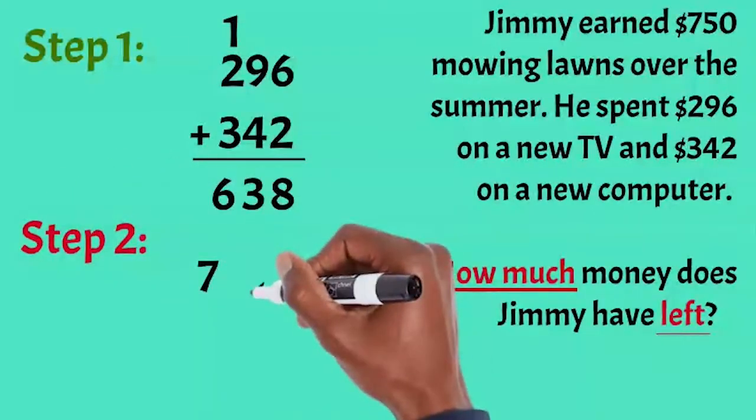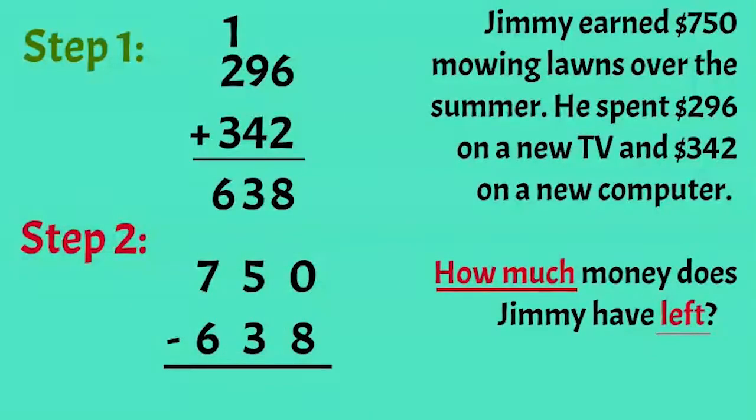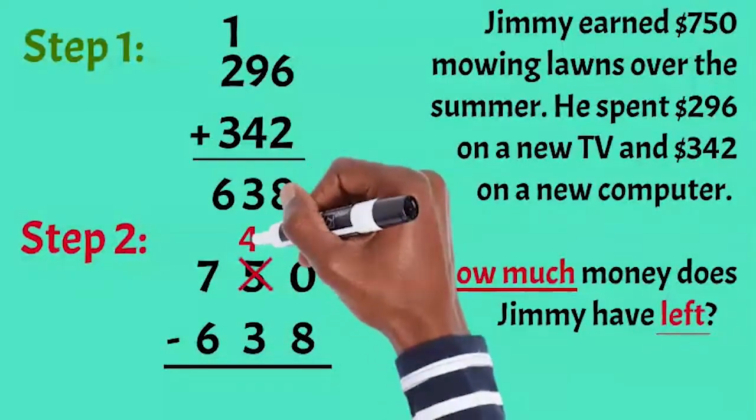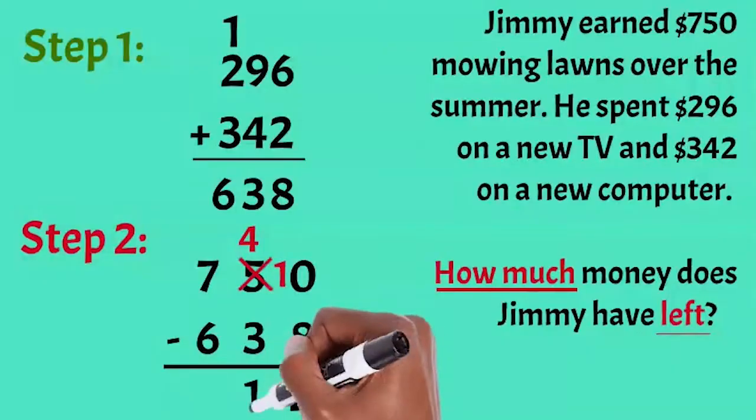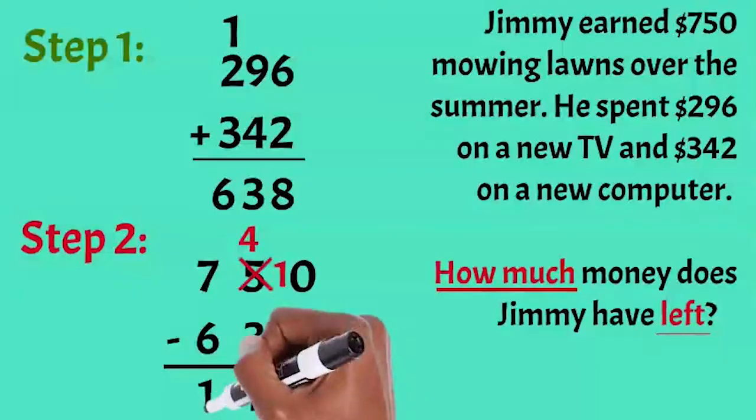Now I can subtract $638 from the amount he earned, $750, to find how much he has left. I'll borrow a 10 from the tens place so I can subtract the ones. That gives me 2. In the tens place, I now have 4 minus 3, and that gives me 1. In the hundreds place, 7 minus 6 gives me 1.